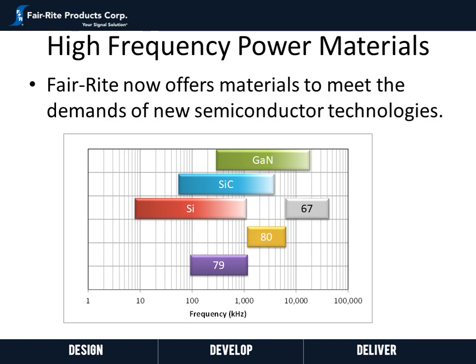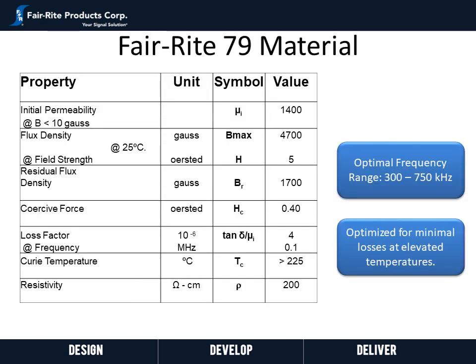Ferrite now offers materials to support the full range of frequencies. Ferrite has had 79 and 67 materials covering frequencies up to around 1 megahertz for 79 material and 5 megahertz for 67 material. 80 material was just recently developed to cover the gap from around 1 to 5 megahertz. As can be seen from the plot, these materials now cover the full range of silicon, silicon carbide, and GaN technologies.